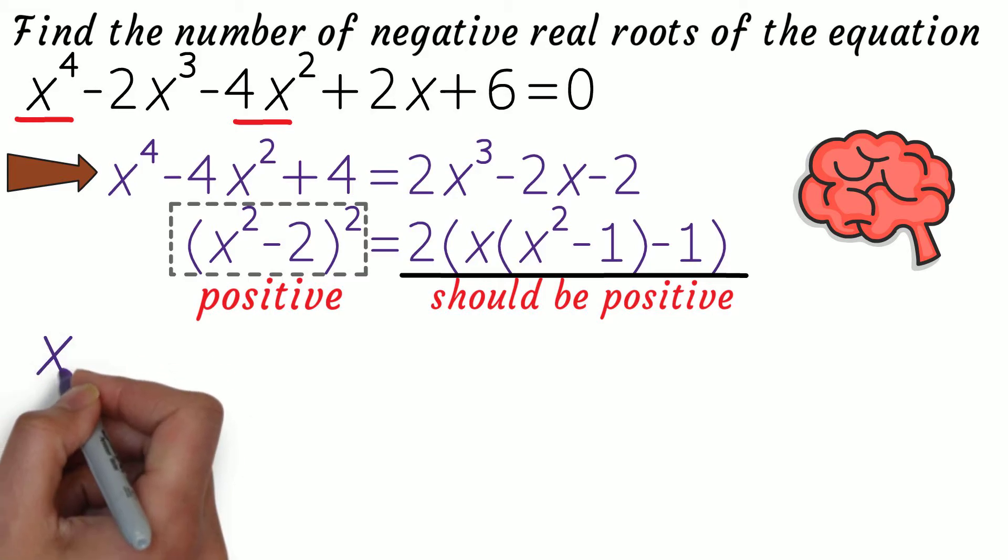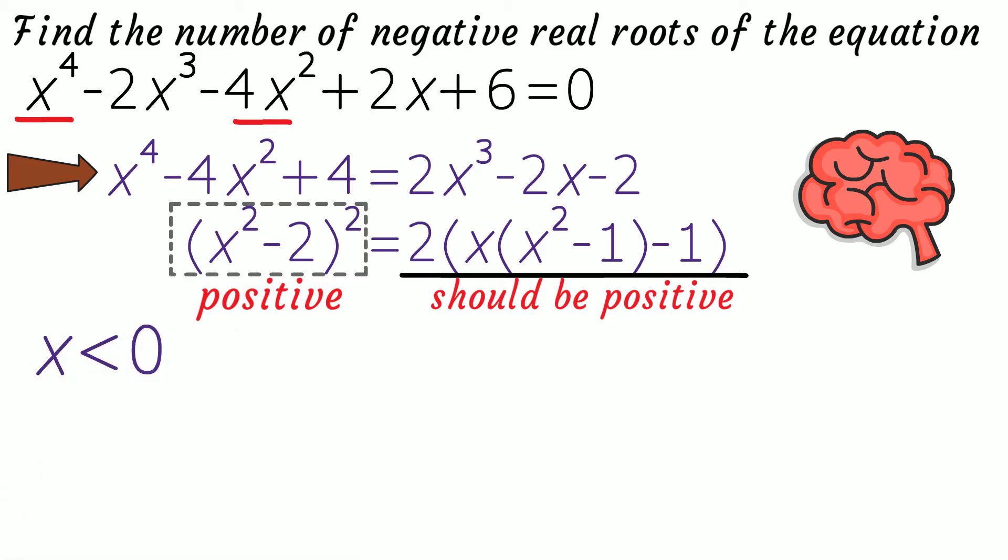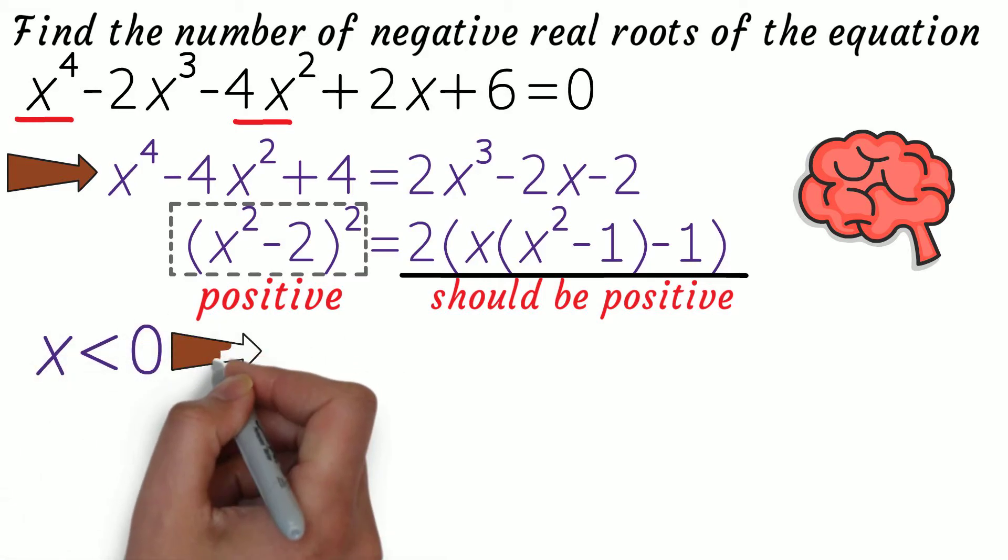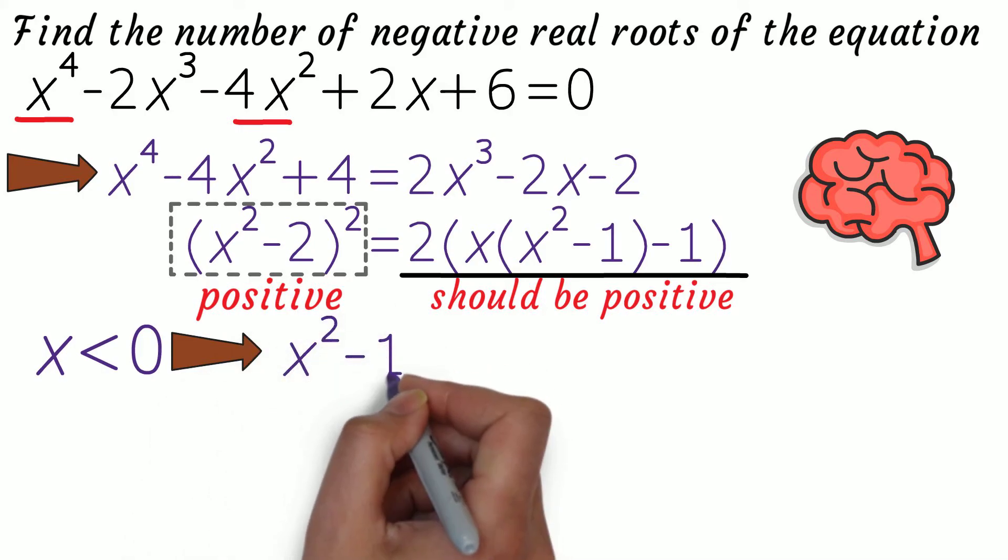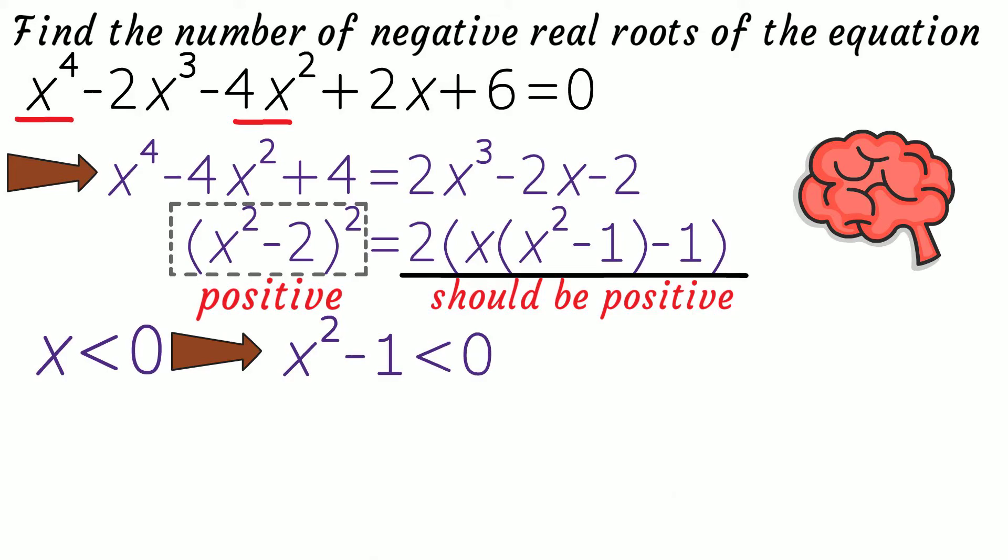Let's check if this is the case here. As we have x < 0, we want x² - 1 also to be less than 0, so that if their products become greater than 1, then we might have some solution.